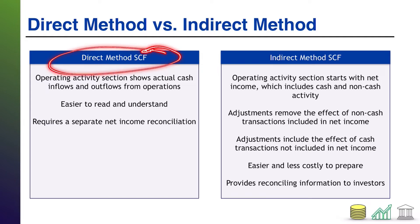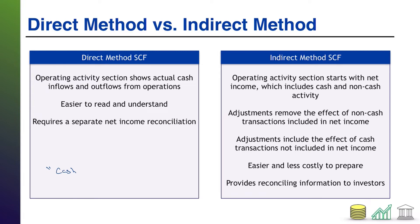Let's start with the direct method statement of cash flows. In the operating section, you will show literally line by line the actual cash inflows and outflows from operations. For example, you might say 'cash collected from customers' and then show a positive number — the cash inflow. Or you might say 'cash paid to suppliers' and then show a number in parentheses, a cash outflow. So you're directly putting what happened and whether that was cash in or out.